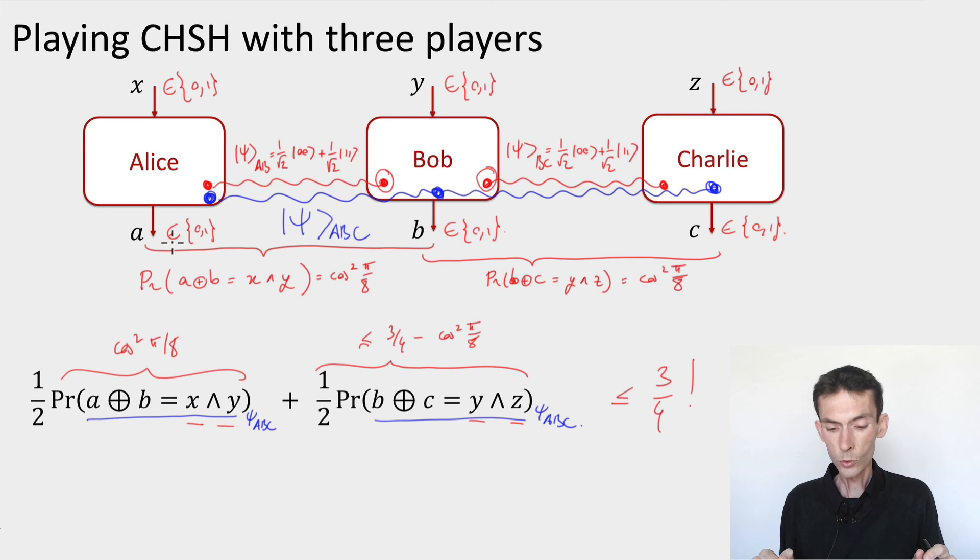which allow for more correlations, but have the advantage that they're easier to work with because the constraints are easier to express. And you'll prove that this bound of at most three quarters holds for non-signalling distributions.